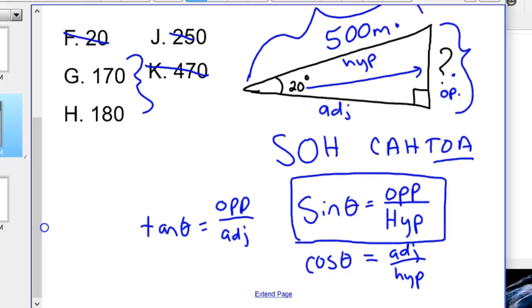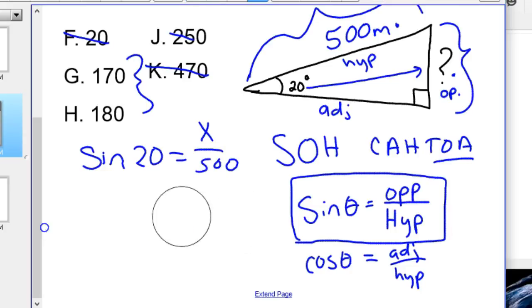And so you would plug in that information. So sine 20 degrees equals question mark, I'm going to call it x, over 500. And so we're ready to get the calculator out and solve that. The ACT, a lot of times, will give you in the problem sine 20, cosine 20, tangent 20, because they want you to do the test without a calculator.